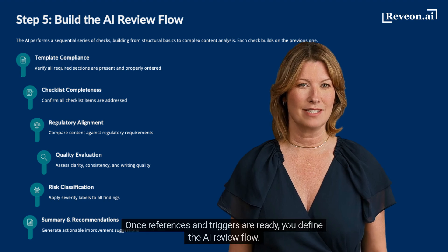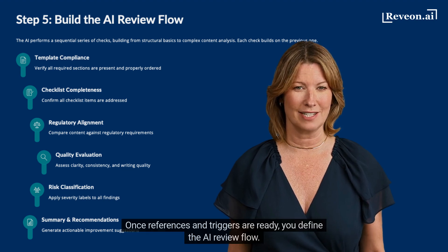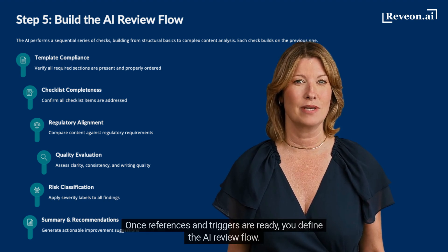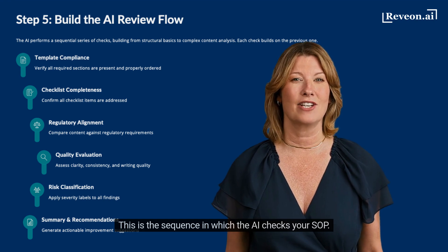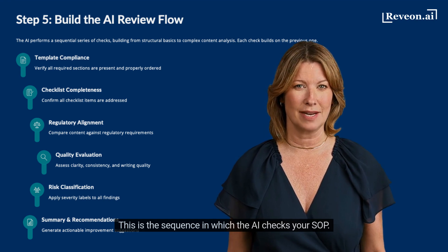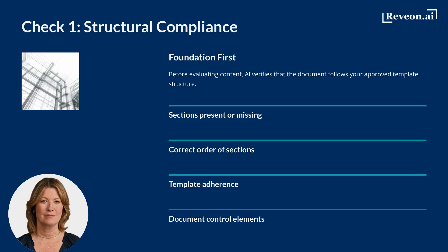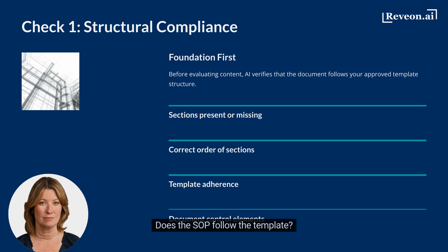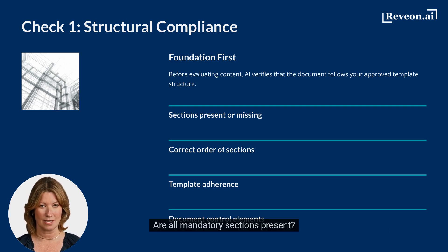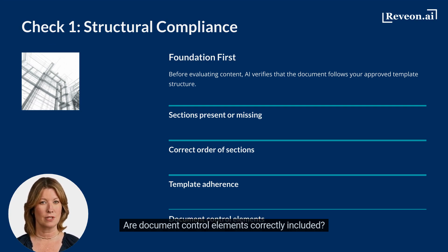Once references and triggers are ready, you define the AI review flow — the sequence in which the AI checks your SOP. First, the AI checks structural compliance: does the SOP follow the template, are all mandatory sections present, and are document control elements correctly included?